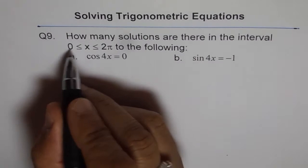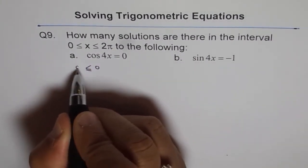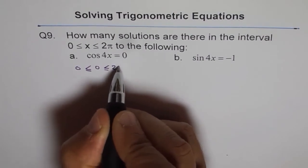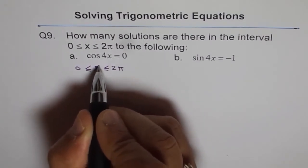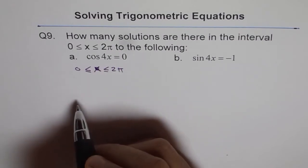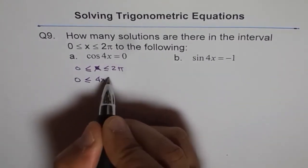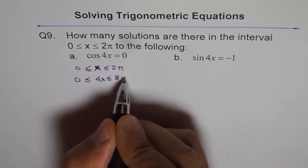Now look here, when our domain is x is between 0 to 2π, in that case, this is x, so x is between 0 to 2π, then 4x will be between what? That means 4x, I will multiply everything by 4 and you get 8π, do you understand?